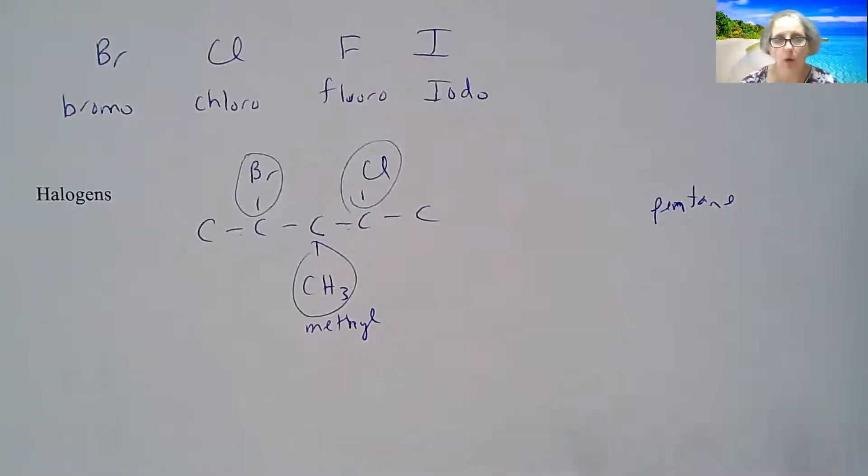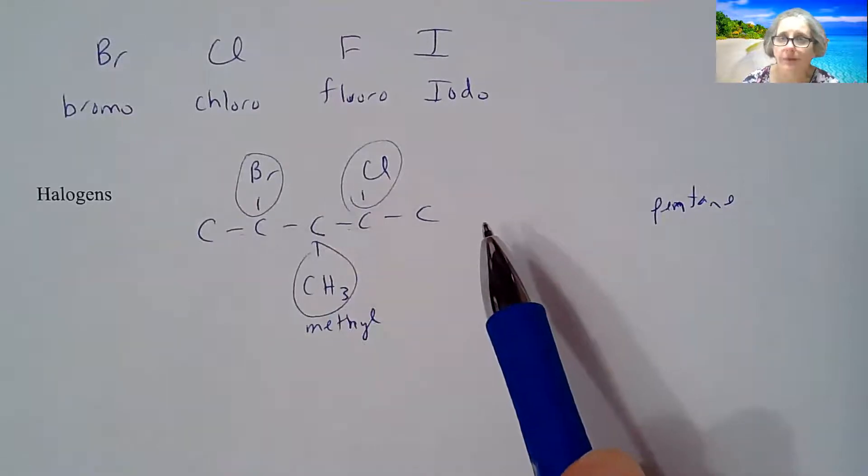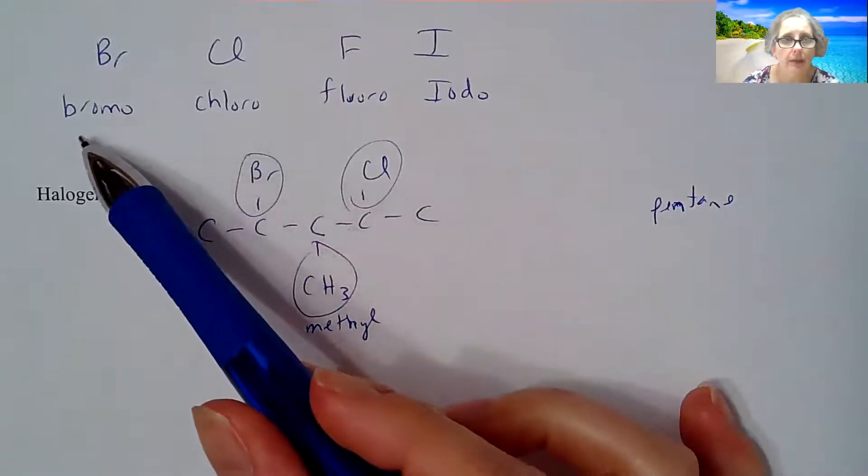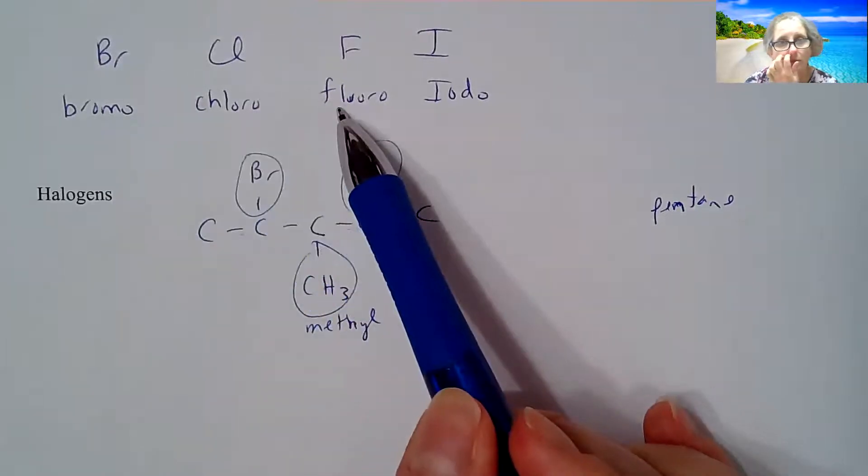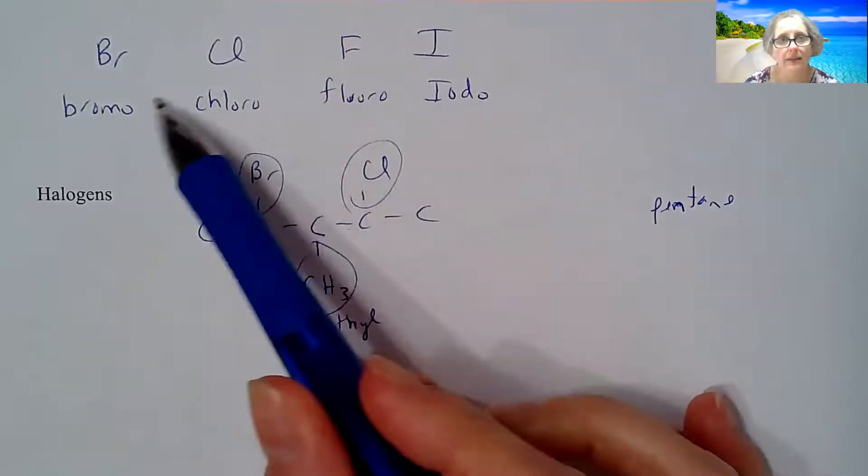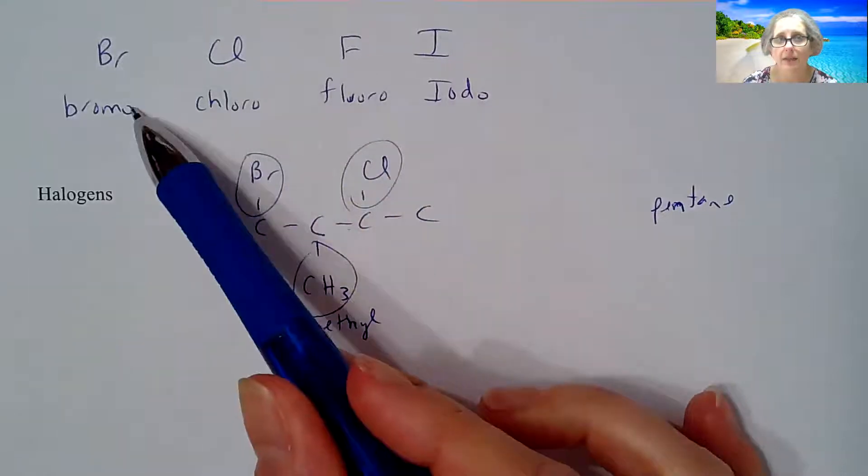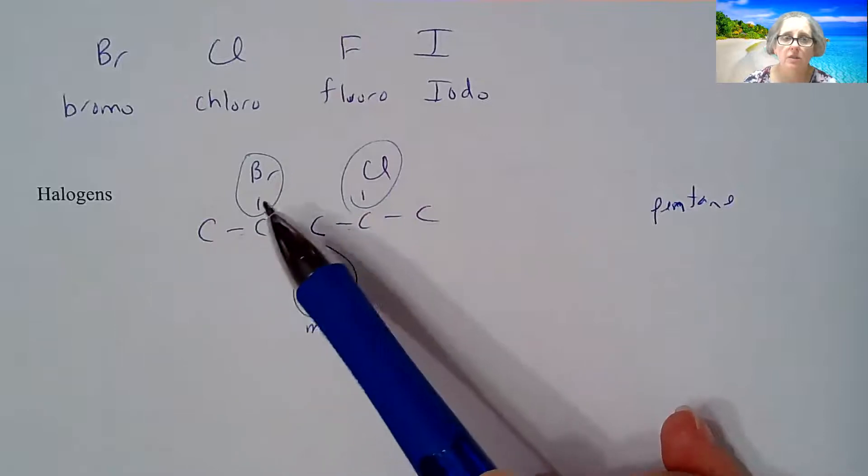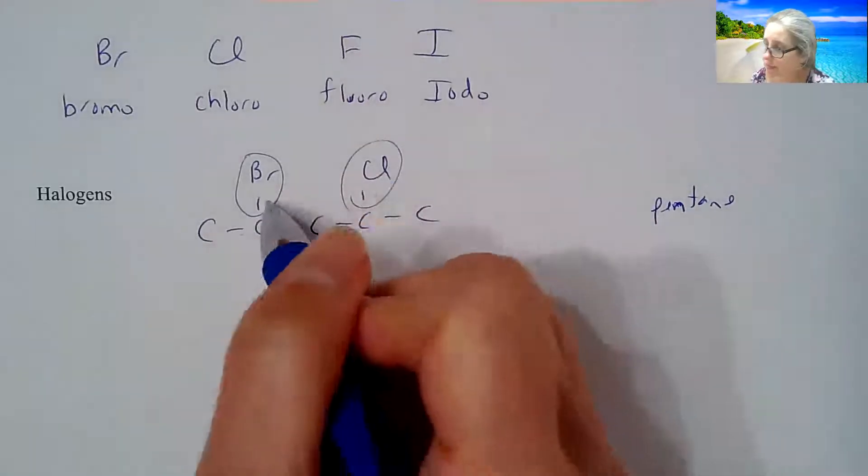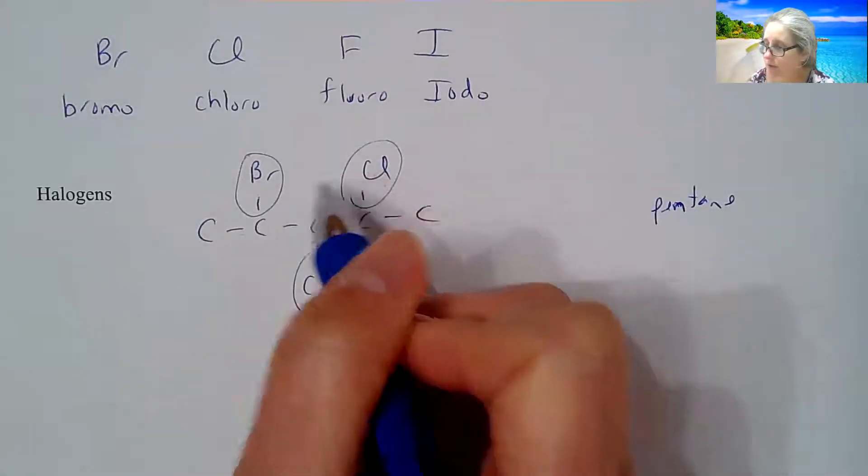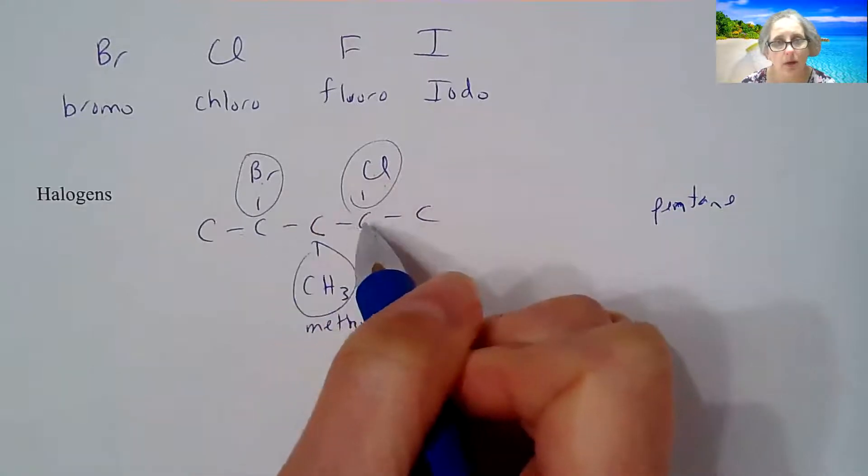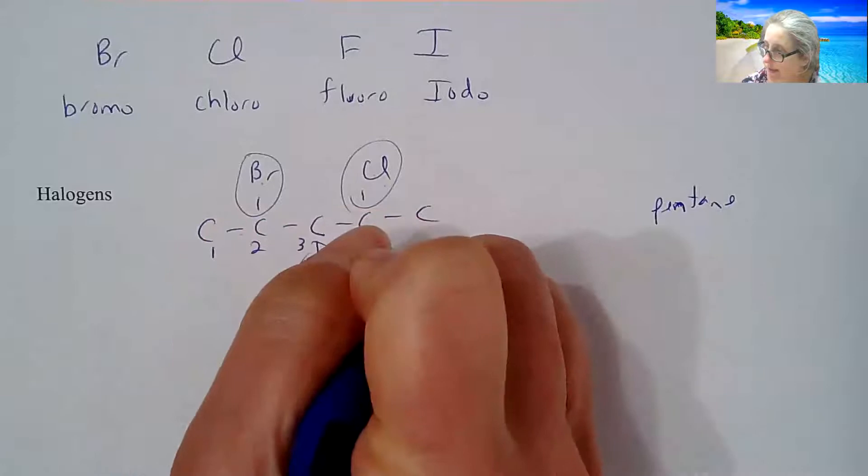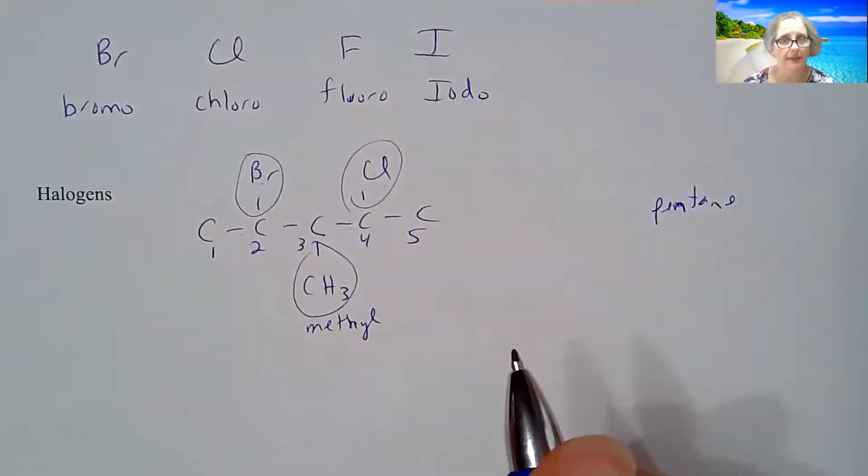So what side do I start numbering, left or right? Well, look at the alphabet. Bromo is going to come before chloro, before fluoro, before iodo. I did put them in the order of the alphabet. I did not put them in the order of what they are on the periodic table. So that means if there is a tie, and because both the chloro and the bromo are one off from the first carbon, I'm going to start numbering on the left side.